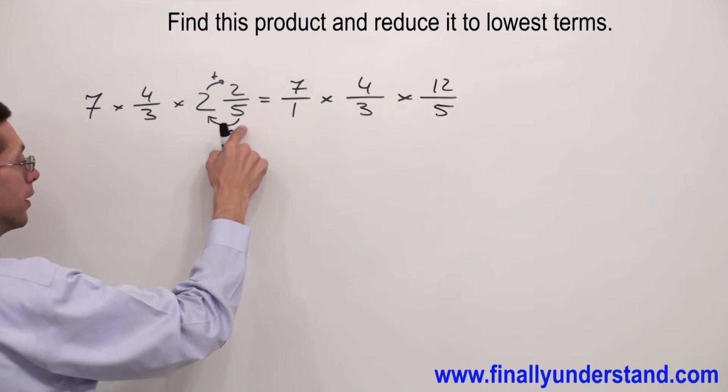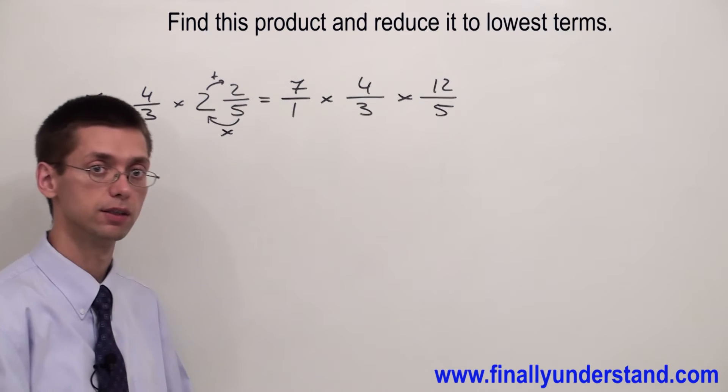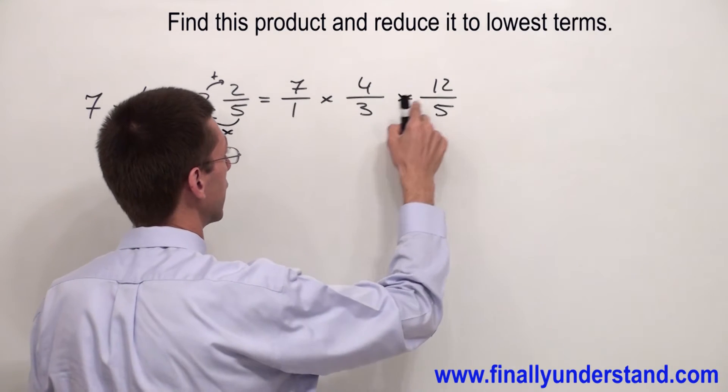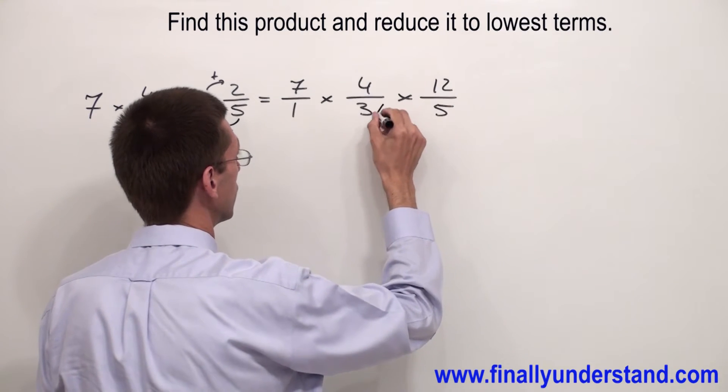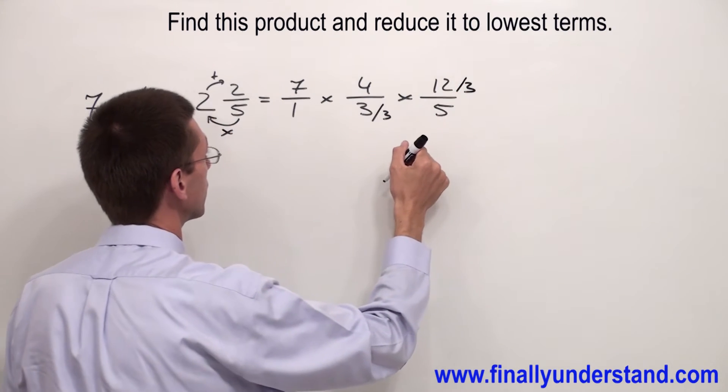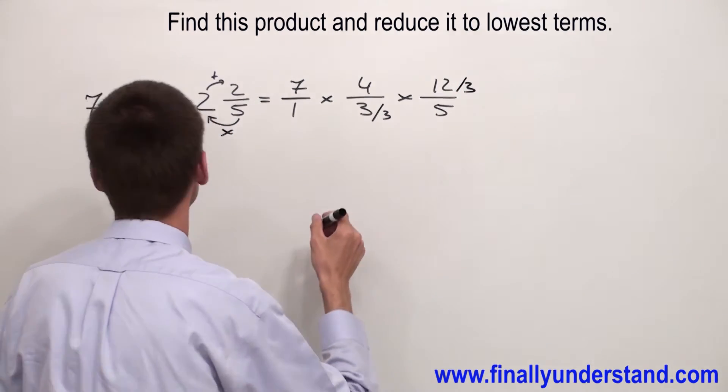Next, check if I can reduce any numerator by any denominator. In this case I have 3 and I have 12. Both of them are divisible by 3, so let me rewrite this problem over here.